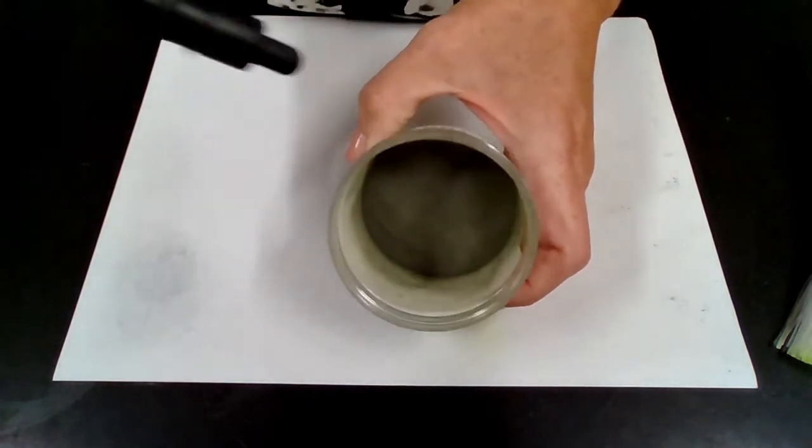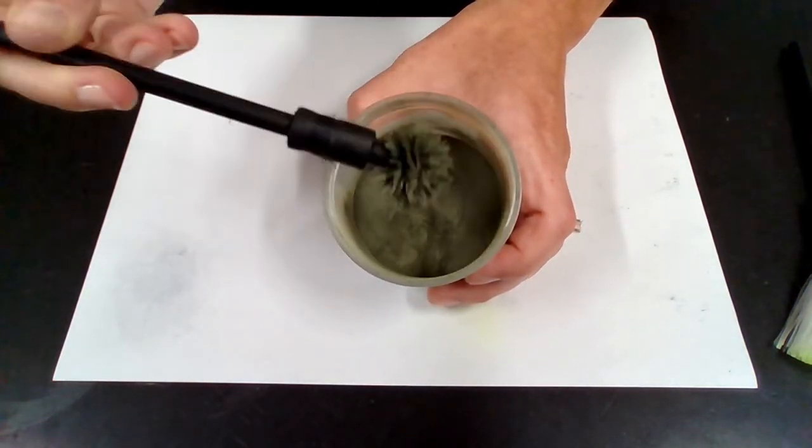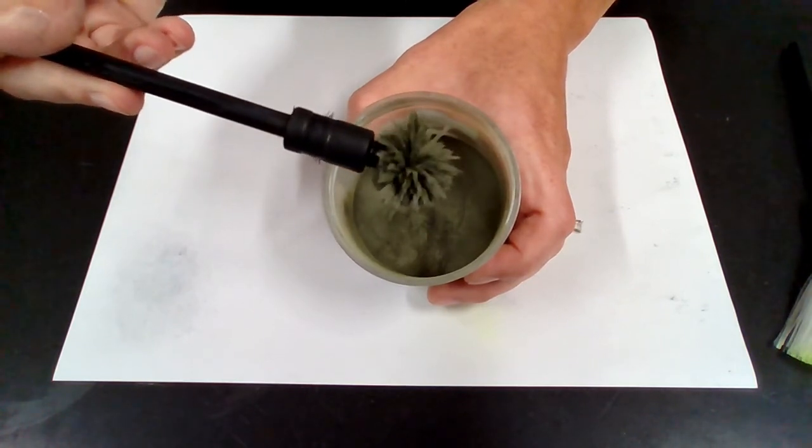And it's also worth noting that you can actually get magnetic fluorescent powder. Here is magnetic yellow. It looks a little bit more gray, but it works in much the same way as your magnetic black powder.